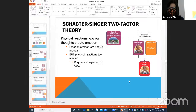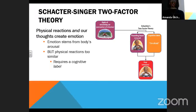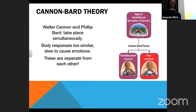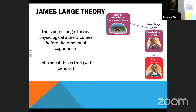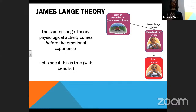So the last time that we were here, we were talking about different types of theories of emotions. We talked about the James-Lange theory, which is basically the idea that when you are experiencing an emotion, that emotion has been caused by physiological arousal. So physiological arousal always comes before your emotional experience.